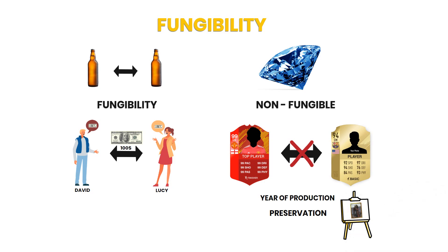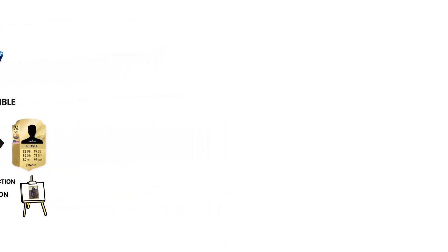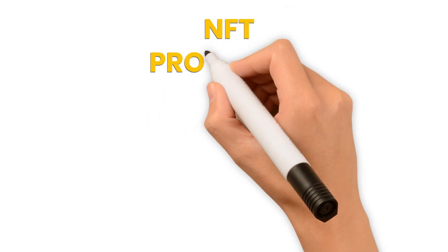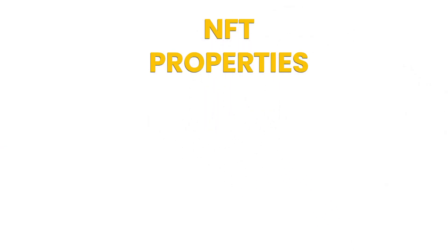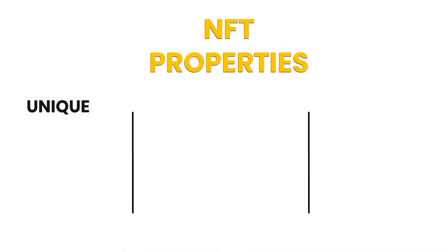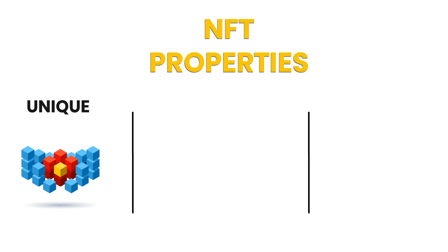A painting, for example, is usually created as only one original copy. Now, as we know what non-fungible actually means, let's see what the most common properties of NFTs are. NFT properties: Unique — each NFT has different properties that are usually stored in the token's metadata.